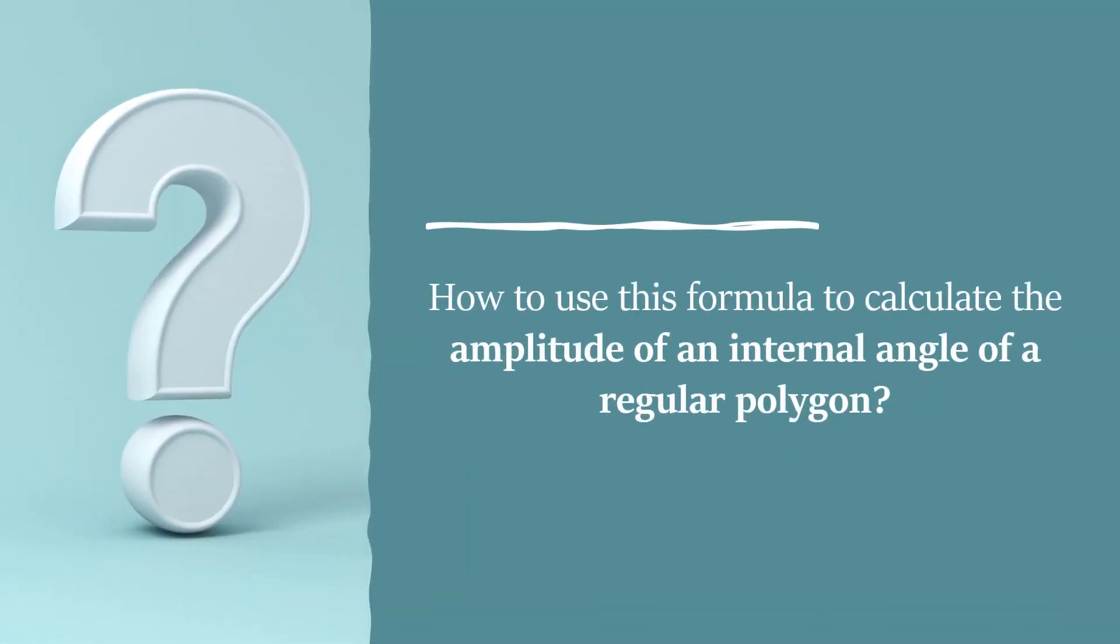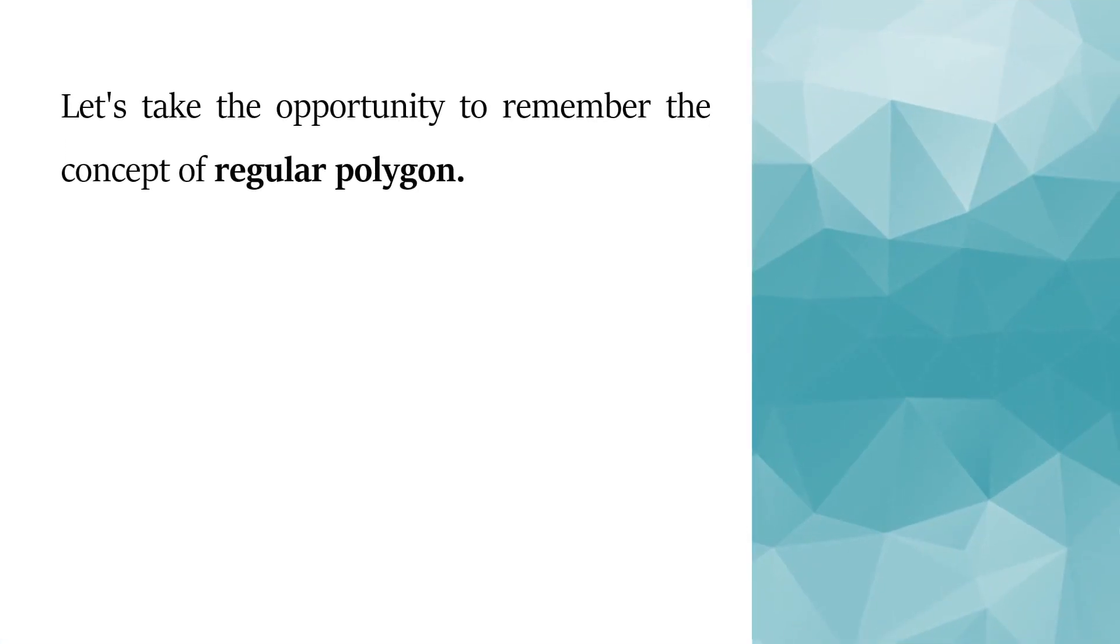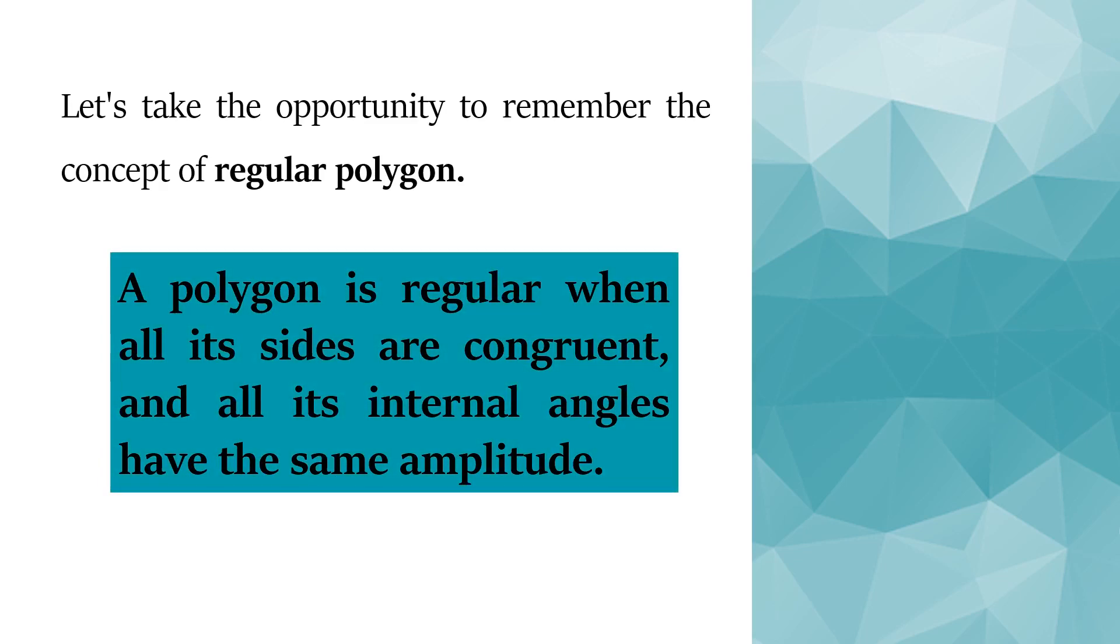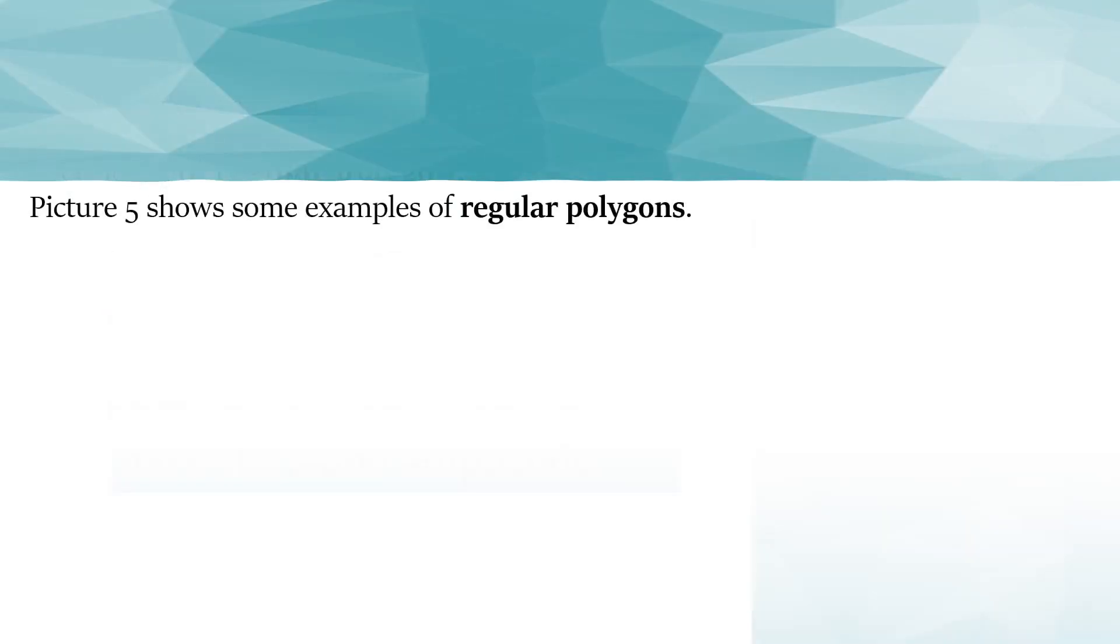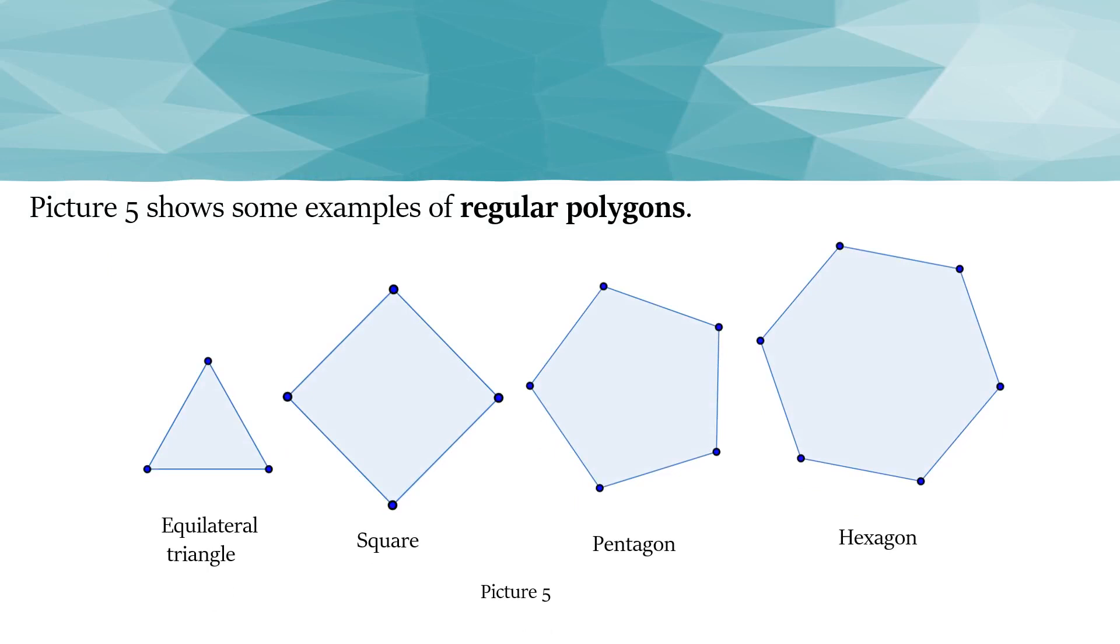How do we use this formula to calculate the amplitude of an internal angle of a regular polygon? Let's remember the concept of a regular polygon. A polygon is regular when all its sides are congruent and all its angles have the same amplitude. Picture 5 shows some examples of regular polygons.